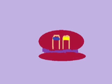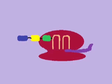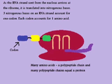As the RNA strands sent from the nucleus arrive at the ribosome, they are then translated into nitrogenous bases. Three nitrogenous bases from the RNA strand account for one codon.